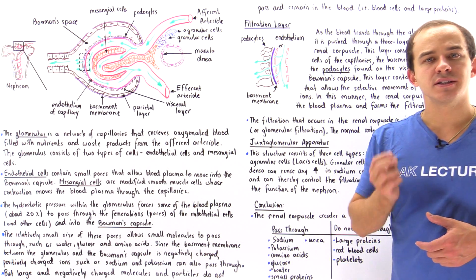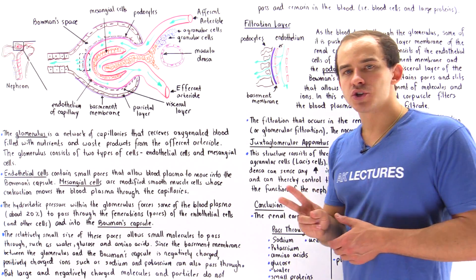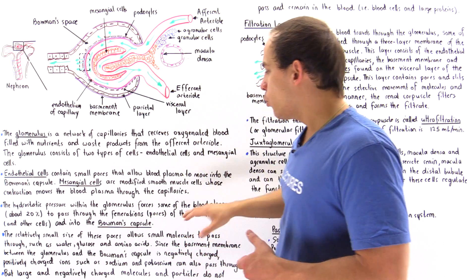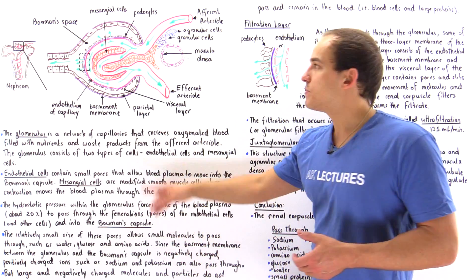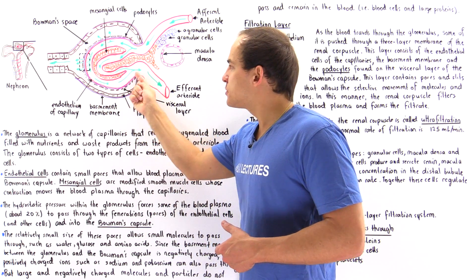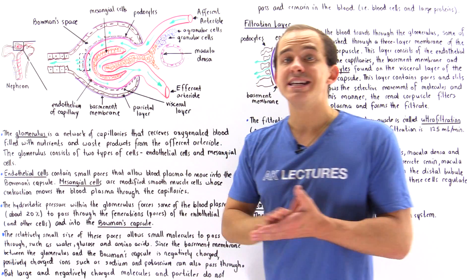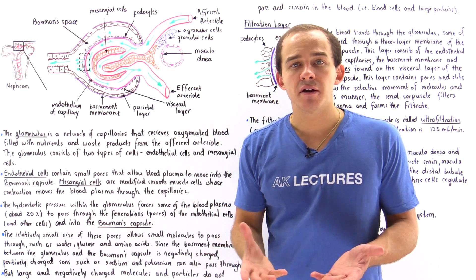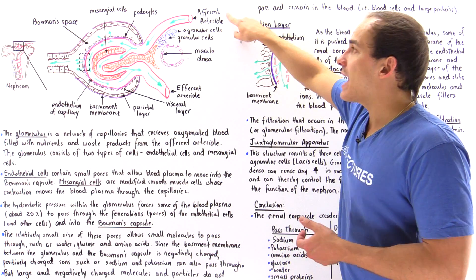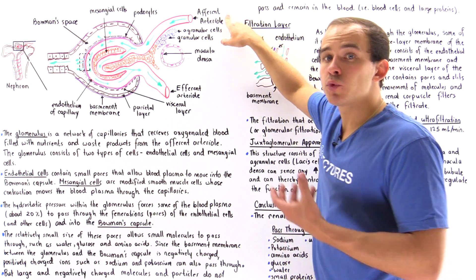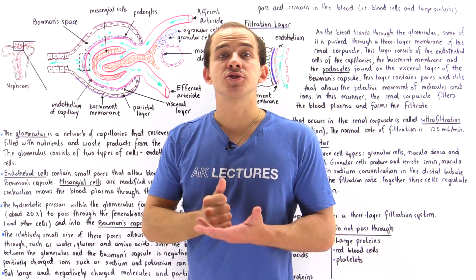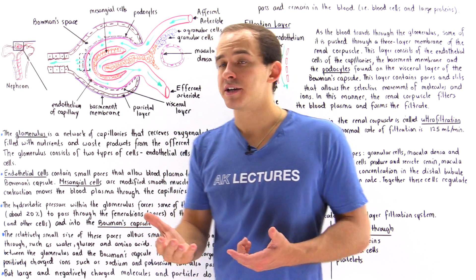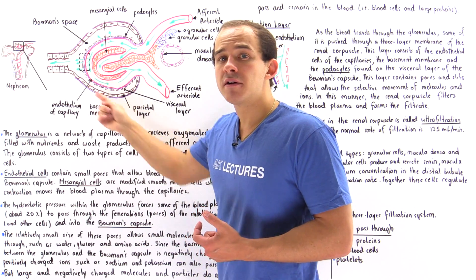The renal corpuscle actually consists of two different structures. We have this cup-shaped structure, which is the Bowman's capsule, and within the cavity of this Bowman's capsule we have a network of blood capillaries known as the glomerulus. Our afferent arteriole brings and carries oxygenated blood filled with nutrients as well as waste products into the glomerulus.